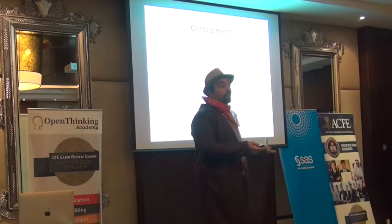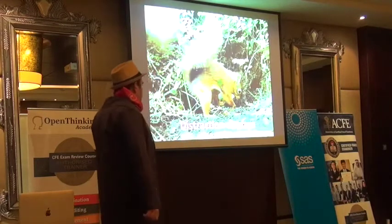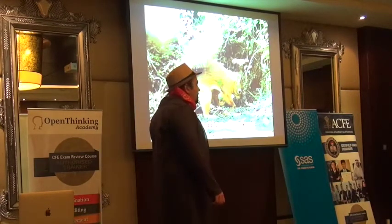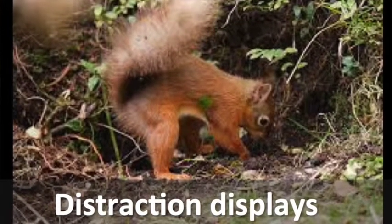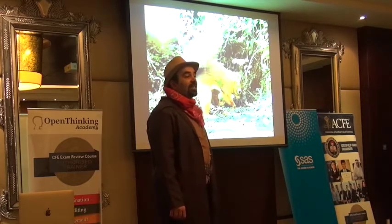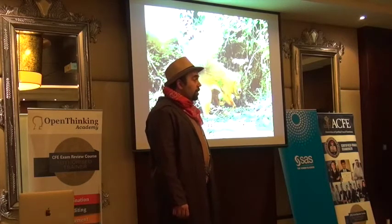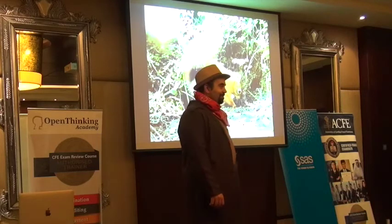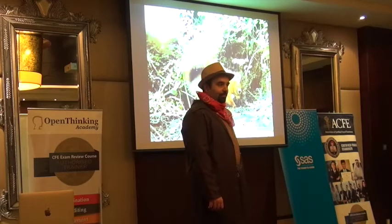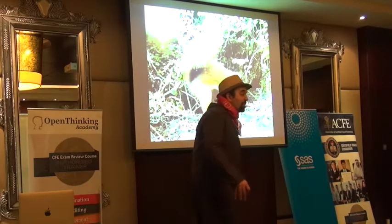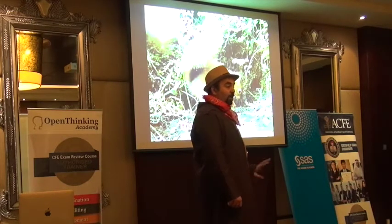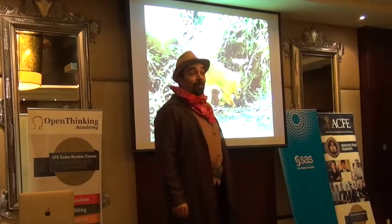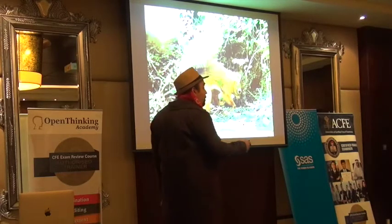Squirrels use a very interesting technique called distraction displays. IQ tests show they are so smart — they can memorize all the locations for all the nuts they hide in the forest. For example, a squirrel goes to find a nut and sees another squirrel watching. So it opens a hole, acts like it throws the nut in, but keeps the nut under its body, closes the hole, then goes around and when no one is following, hides it in another place.